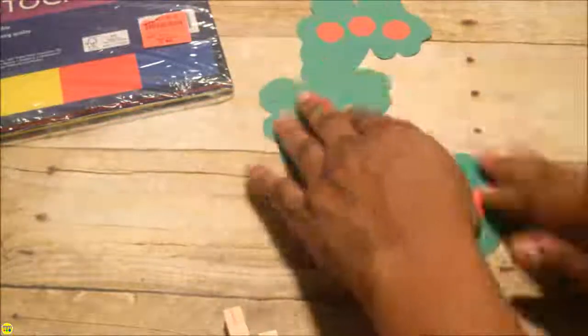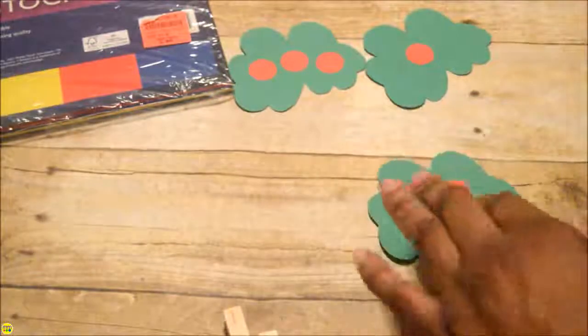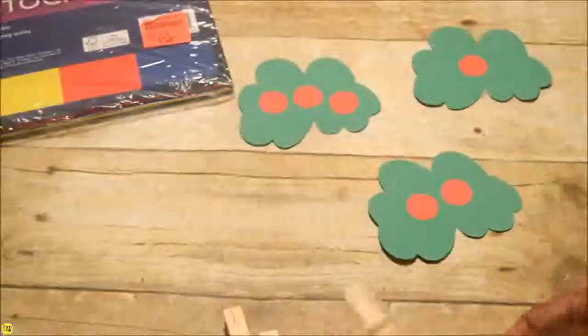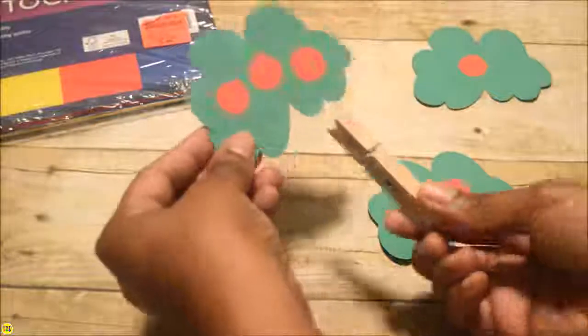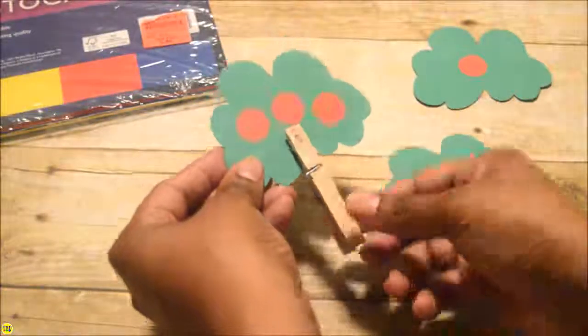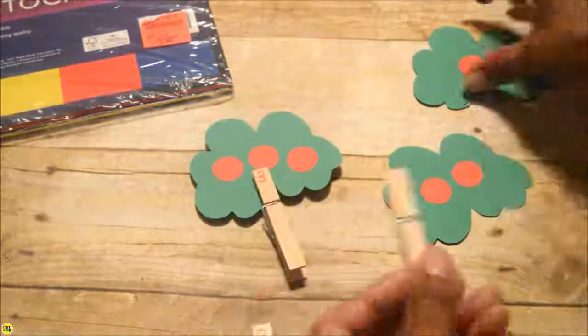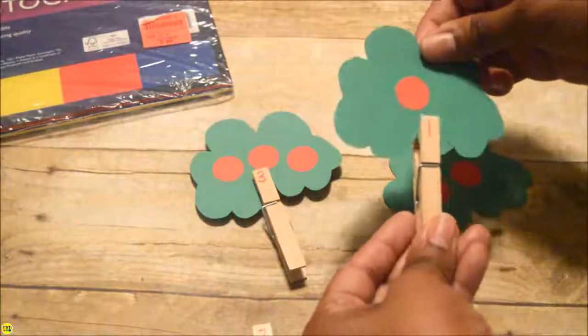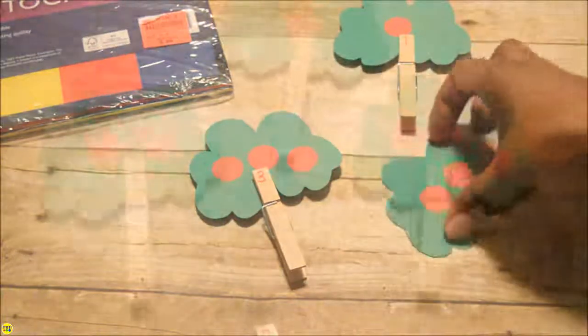Keep the tree tops separate from the clothes pins. Ask your child to match the correct clothes pin tree trunk to the matching tree top. Count the number of apples with your child and help them find the clothes pin with that number on it and clip the clothes pin on.